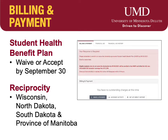There are two important messages that could appear under the Billing & Payment tab. The first: if you have not responded to the Student Health Benefit Plan, you will have a message in red to either accept the health insurance or waive it by September 30th. If you have insurance coverage from a family member's plan, then you must waive the health insurance. Be sure to have your insurance card to complete the waiving of your student health benefit.